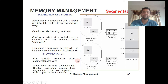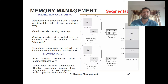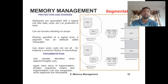Fragmentation is also a consideration. Segmentation uses variable allocation since segment lengths vary. Because segments of different lengths are allocated variably, there are some fragmentation issues in the system. Smaller segments mean less fragmentation, while larger segments mean more fragmentation. Compaction can be used since segments are relocatable.